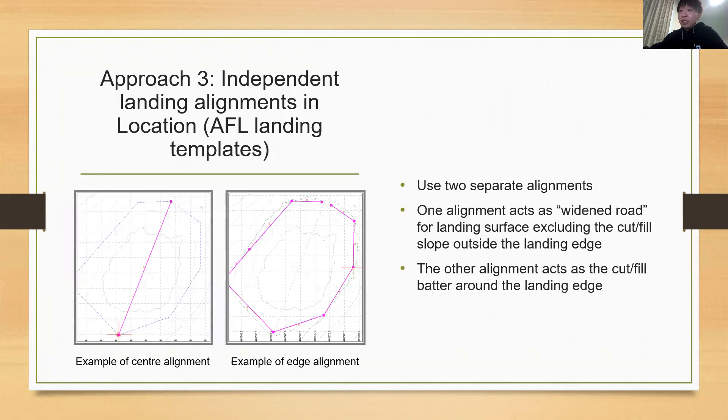And the third approach is the landing design template that is currently being used in RoadEng Forest. The method uses two separate alignments in location. One acts as the landing surface, which is similar to the parameter override method. But the fill and cut batter of the landing was said to be excluded from this alignment. And the other alignment acts as the cut and fill batter around the landing edge and excludes any earthwork inside the landing area. The individual align method in the following sections will be referred to this method.